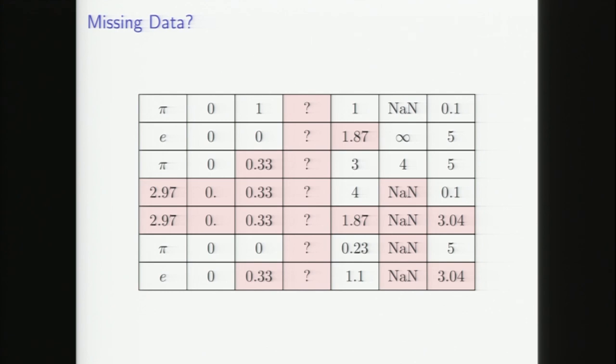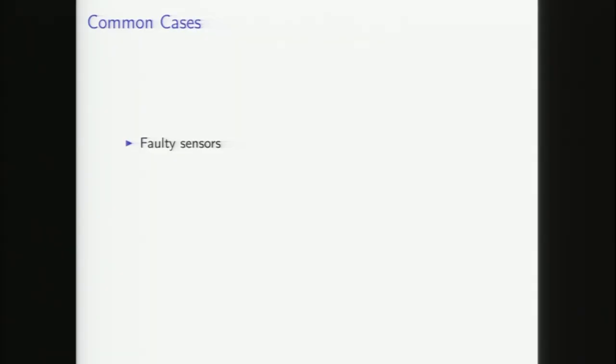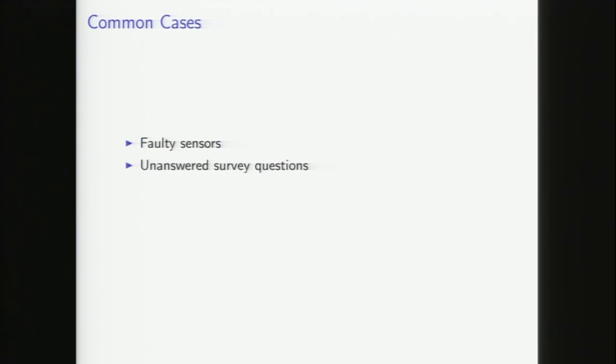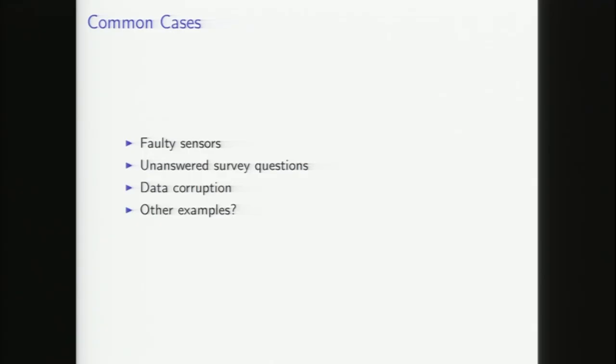What I'd like to talk about is the problems that come up in missing data imputation and some more advanced strategies. Missing data can come from basically everywhere — faulty sensors, for example measuring current and voltage where if your voltage goes above a certain range your current measurements get lost. Or maybe you're doing a survey like the South African census and a bunch of people aren't comfortable giving their income. Maybe you had lost packets or a corrupted hard drive.